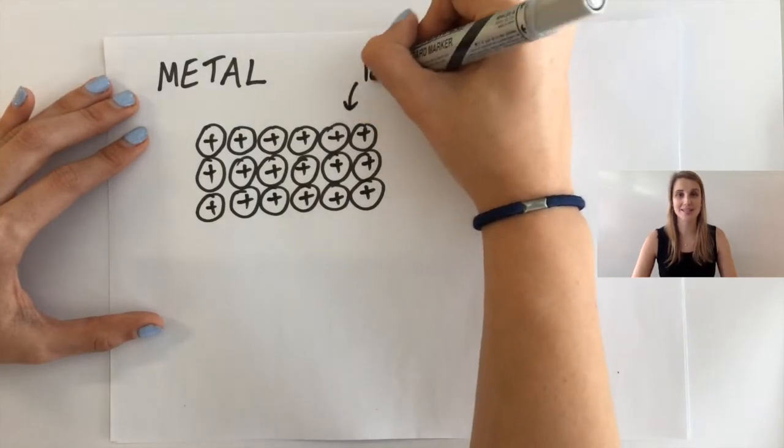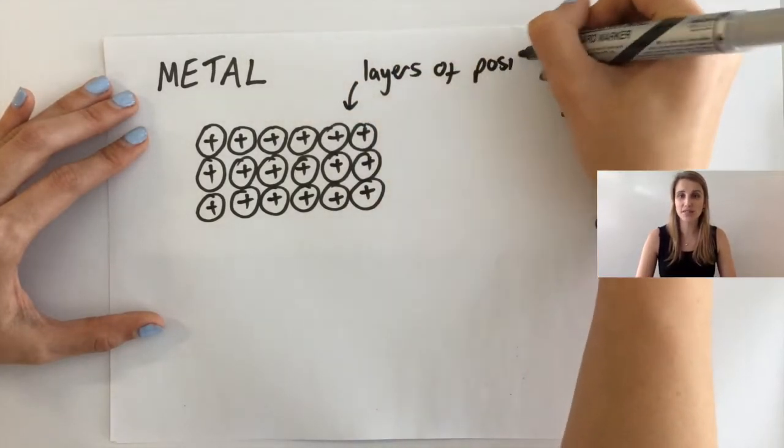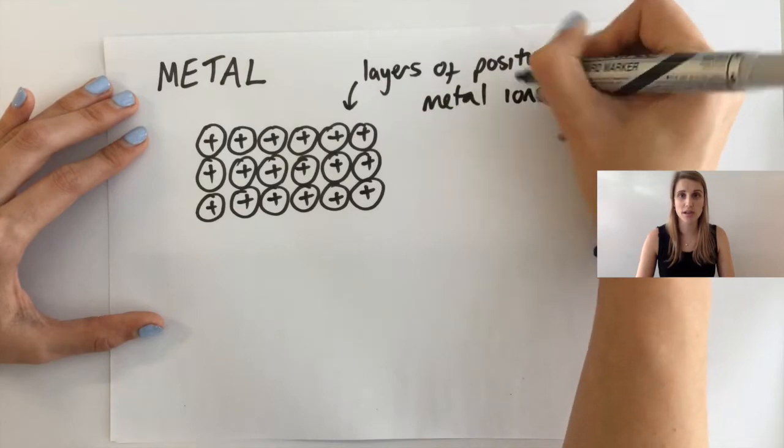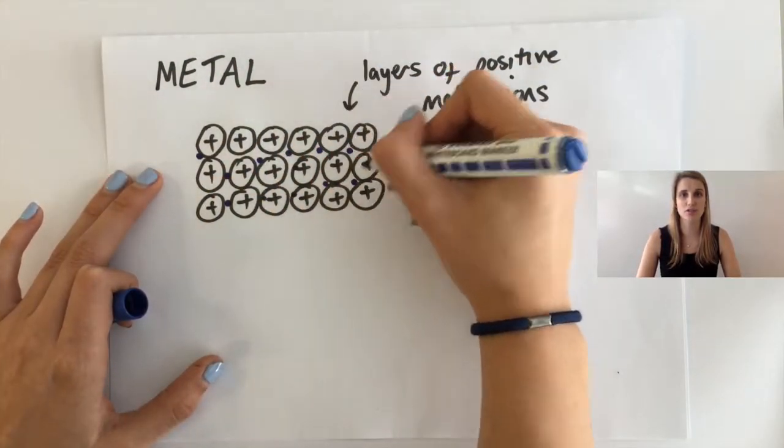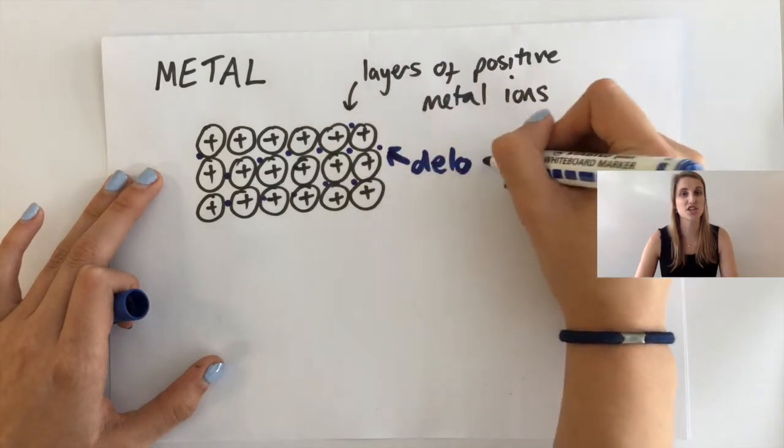So what you've got here is layers of positively charged metal ions surrounded by a sea of delocalized electrons that are allowed to move throughout. That's what helps it to conduct electricity.